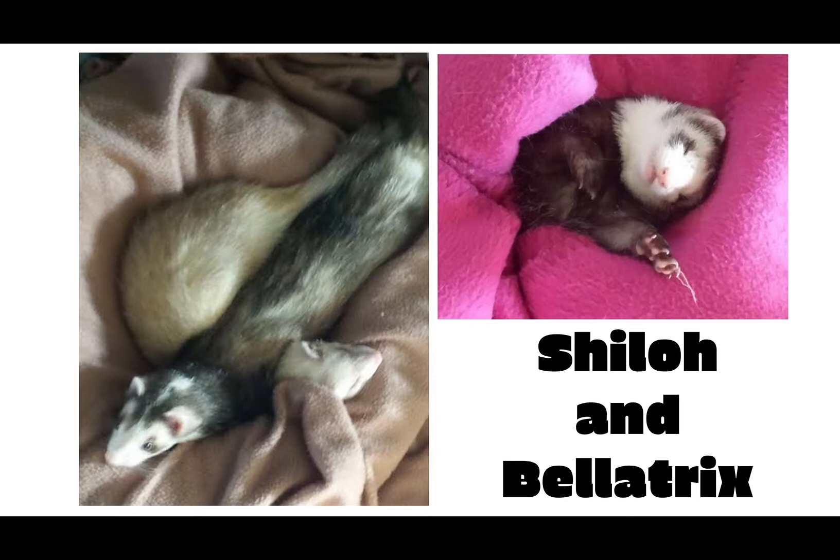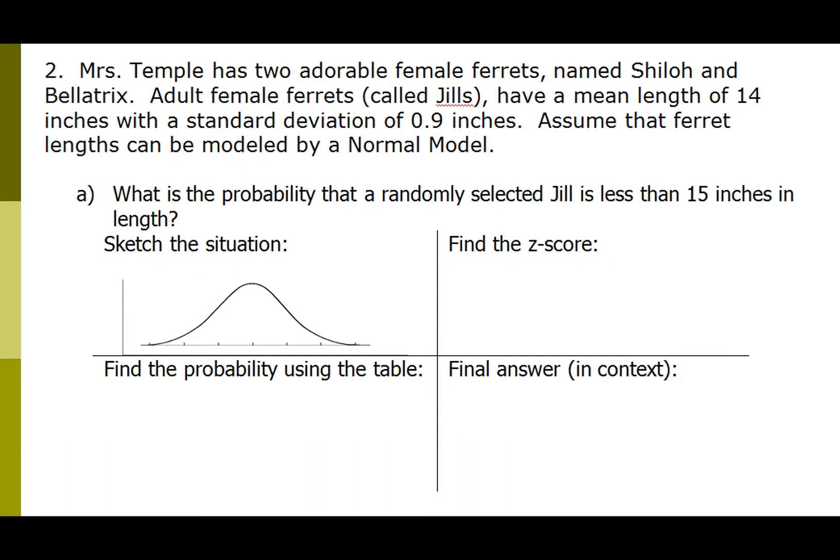Now let's look at some context problems using Shelley's ferrets — Shiloh and Bellatrix. Adult female ferrets, called Jills, have a mean length of 14 inches and a standard deviation of 0.9 inches, and we assume ferret lengths follow a normal model. For these problems, we follow four steps: sketch the situation, calculate the z-score, find the probability using the table, and give a final answer in context.